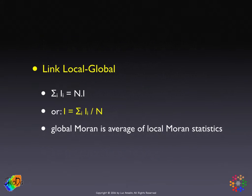If we look at this carefully, we see that the sum of the local statistics is n times the global statistic, or equivalently, the global statistic is the average of the local statistics. The global statistic just reflects a central tendency of the local statistics, and how we get to that central tendency is where we might find interesting patterns of local instability or structural breaks, as we saw in the analysis of the Moran scatterplot.